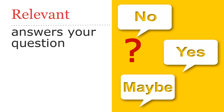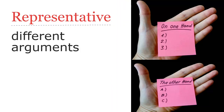Make sure the sources you choose are relevant — they should help you answer your question. Your sources should also be representative of the research on your topic. That means you need to read quite a few sources, think about them, and pick the ones you think best represent the research you find. This may mean including different arguments or approaches.